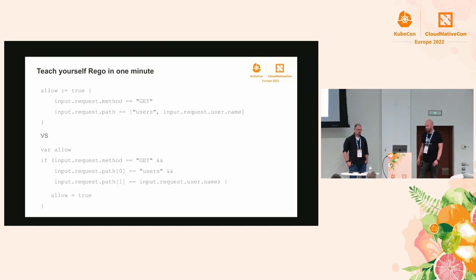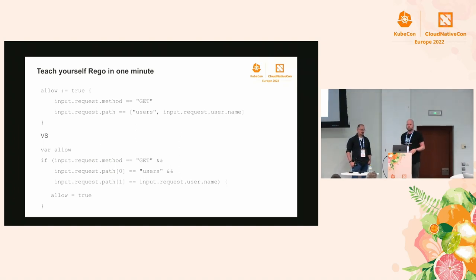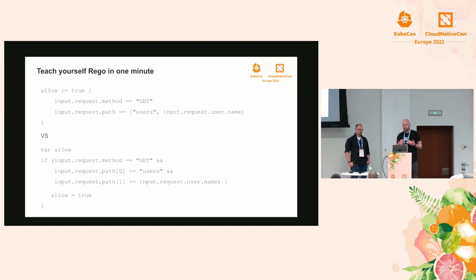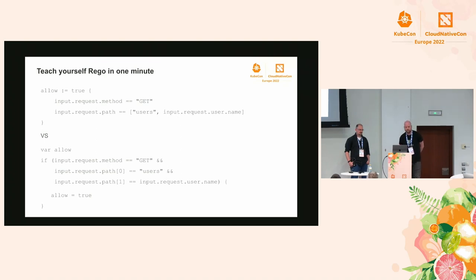Here's a crash course in Rego - teaching yourself Rego in one minute. On the top, we have a policy with one rule. You can think of a rule a bit like an inverted if-then statement. We say: allow is equal to true if all the conditions in the body are true. In this case, allow evaluates to true if the input request method is GET, the first path component is 'users,' and the next path component equals the username provided in the input. If you wrote this in JavaScript, it would get quite clunky with repeated assertions in if statements, and it doesn't compose very well.